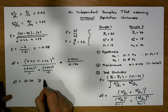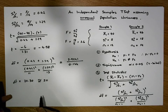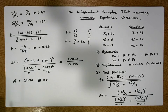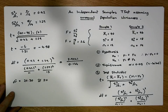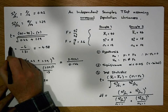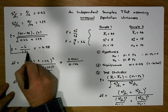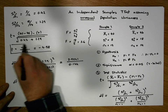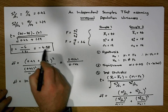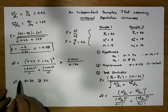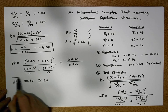Approximately 20.3, and rounding to the nearest whole number gives us 20. Our two important statistics are our test statistic, which is minus 4.58, and our degrees of freedom, which is 20.